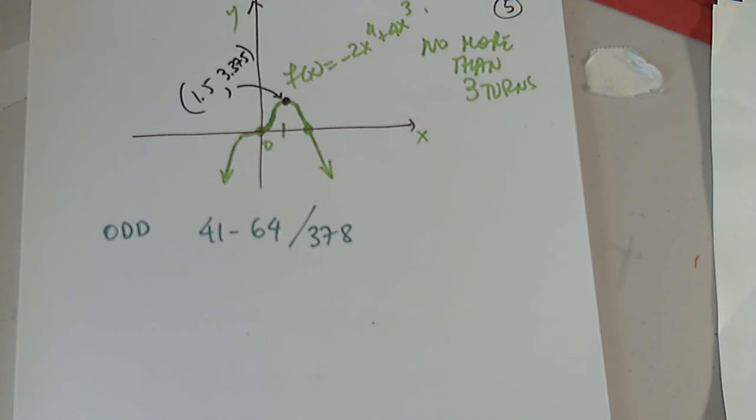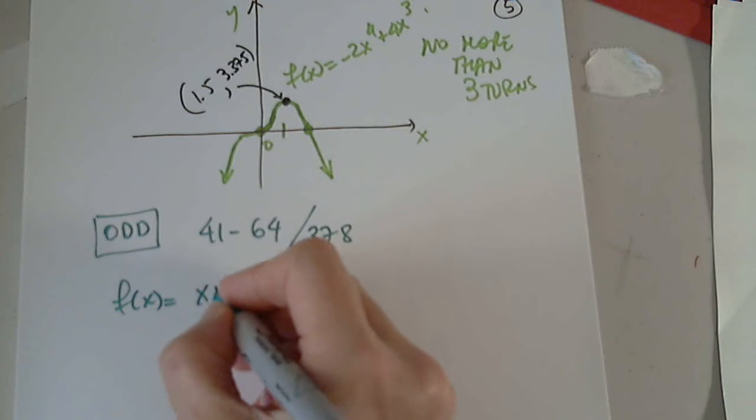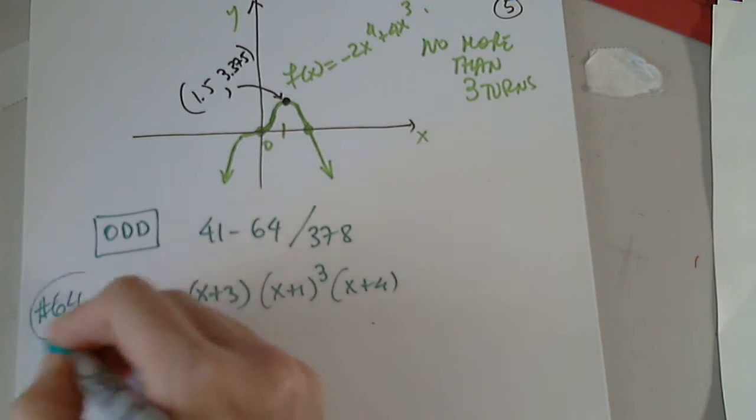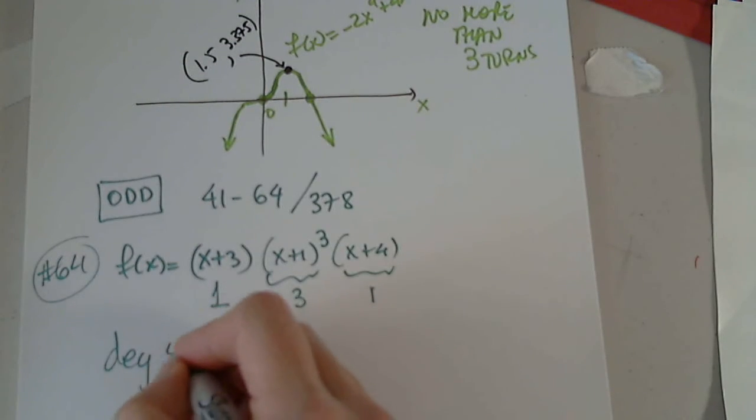Will anyone try to choose an odd degree now? It's 41 through 64. And the page is 378. An odd degree. Let's do 57. 57. 3, 4, 5, 6 is degree 6. 2, 4, x squared. 3, 4, x cubed. And 1, x. 2 plus 3 is 5 plus 1 is 6. 57 is degree 6. We want to choose an odd one. We can do that after. What about 64? Good one. I was just looking at it. Awesome. F of x equals x plus 3, x plus 1 to the third, x plus 4. So, this is 64. Well done. Indeed, this is degree 1. This is degree 3. And this is degree 1. 3 plus 1 plus 1 is 5. Very good.